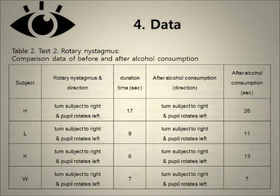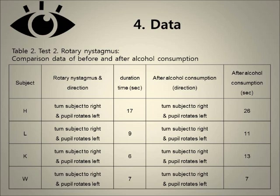This is the comparison data before and after alcohol consumption in Rotary Nystagmus. The subjects were turned right in both conditions, and the pupils rotated left in both cases. The duration times before and after alcohol were: Han, 17 seconds to 26 seconds; Lee, 9 seconds to 11 seconds; Kim, 6 seconds to 13 seconds; Wu, 7 seconds to 7 seconds.